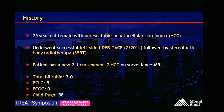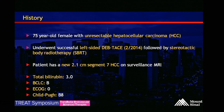Today, we have a 75-year-old female who has unresectable hepatocellular carcinoma. She previously underwent left-sided DEB-TACE — drug-eluting bead TACE — in February of last year, followed by stereotactic body radiotherapy. She presents with a new 2.1-centimeter, segment 7 hepatocellular carcinoma on surveillance MRI. Her total bilirubin is 3. She is a BCLC-B patient. Her performance status is 0, and she's Child-Pugh B8.